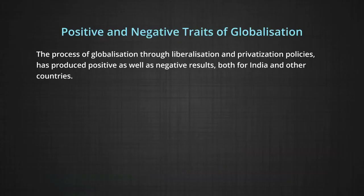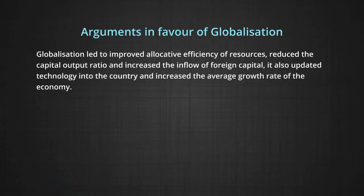The process of globalization through liberalization and privatization policies has produced positive as well as negative results for India and other countries. Arguments which favor globalization: globalization led to improved allocative efficiency of resources, reduced the capital-output ratio, and increased the inflow of foreign capital. It also updated technology in the economy and increased the average growth rate. It led to an increase in the flow of goods and services among countries.